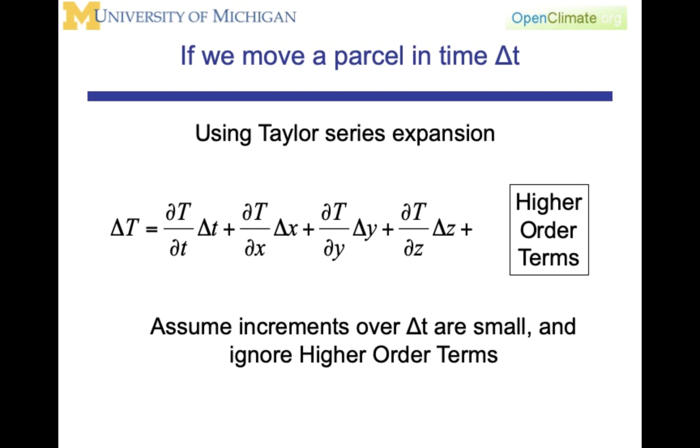Now we're going to imagine that we're going to move this parcel in time and use the Taylor series expansion. If we are making a time displacement, then we can look at our temperature delta T and say that delta T is going to be equal to dT/dt of this displacement. But we're also going to be looking at, because we're looking on this field, dT/dx times delta x plus dT/dy times delta y plus dT/dz times delta z. What we're doing here is we're looking at essentially all the partial derivatives, all of the ways in which the temperature can be changed. Of course, we are going to be assuming that the increments over delta t are small, and we can ignore the higher order terms.